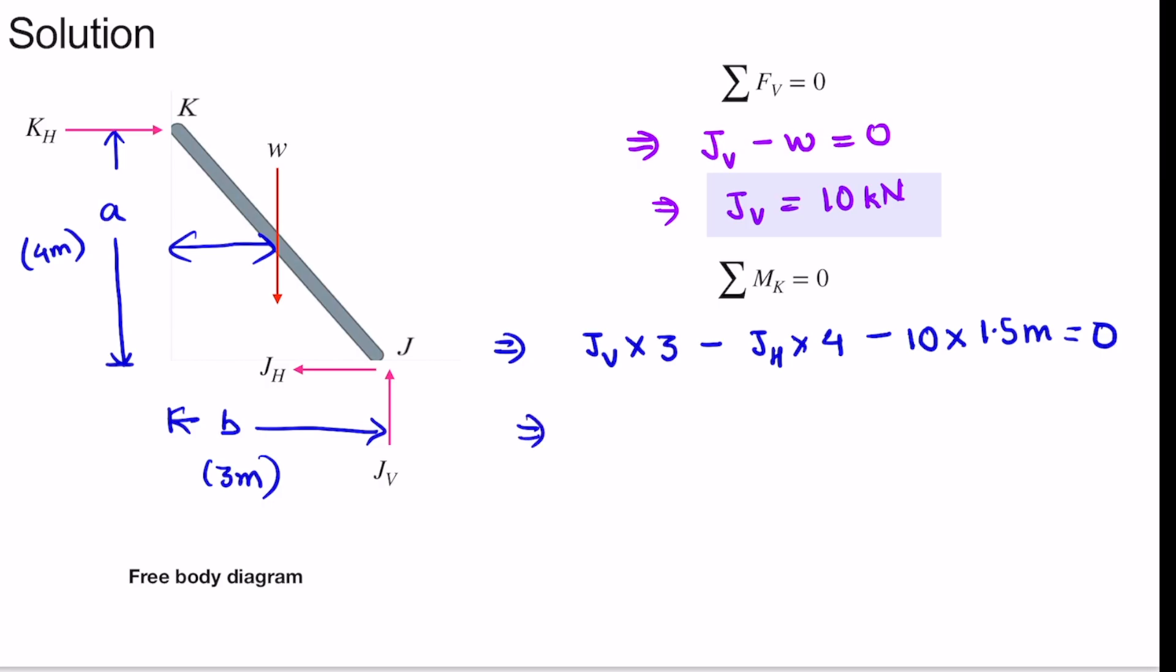So JV is 10 kN. We'll get JH equal to 15 divided by 4 kN, which gives us 3.75 kN. We know that JH is equal to μ times JV.